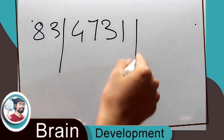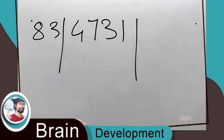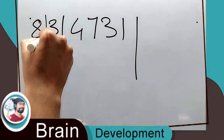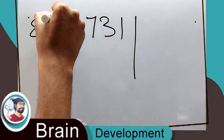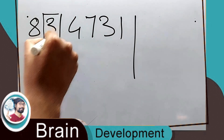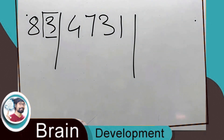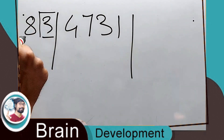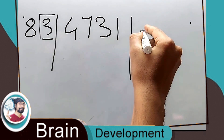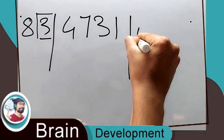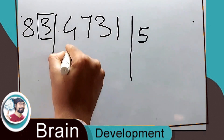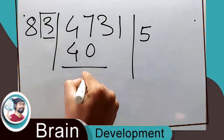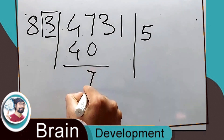Initially we remove the last digit of the divisor and just divide with 8. So 4731 divided by 8. Eight fives are 40, and the 7 will come down — this 3 will come. We know this part very well.